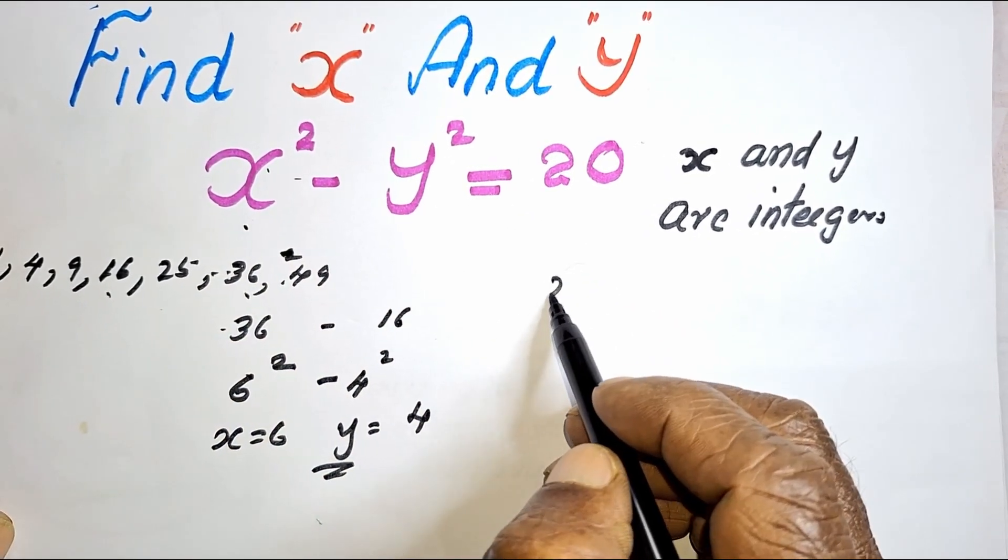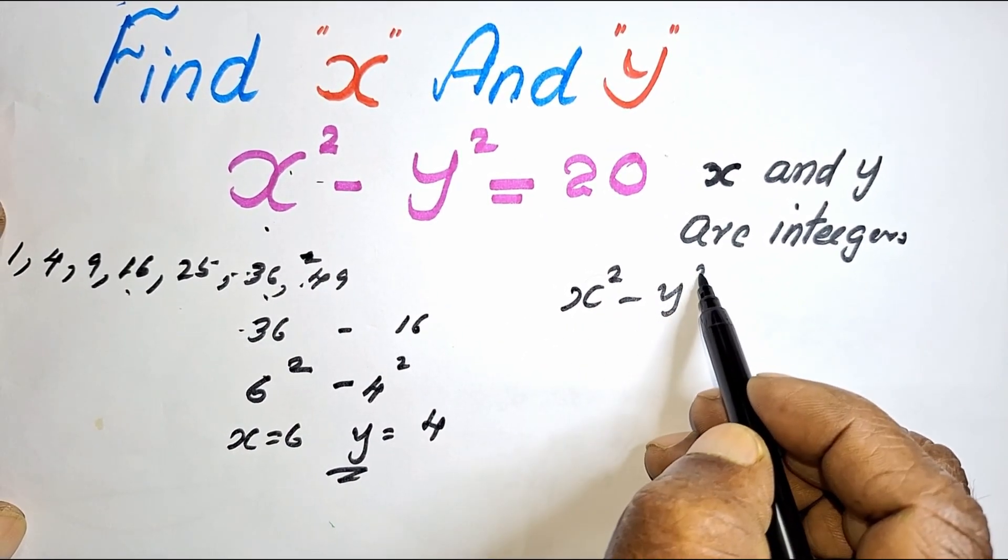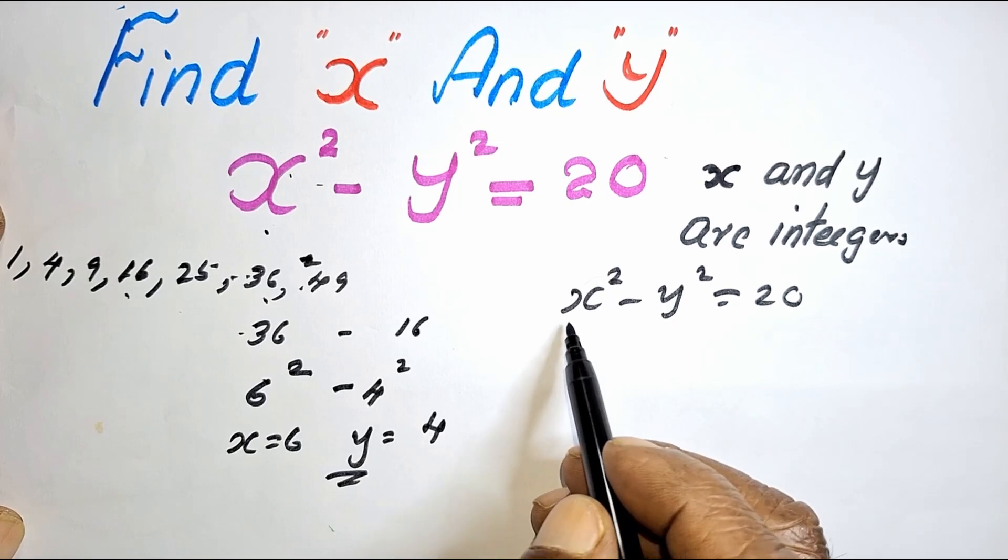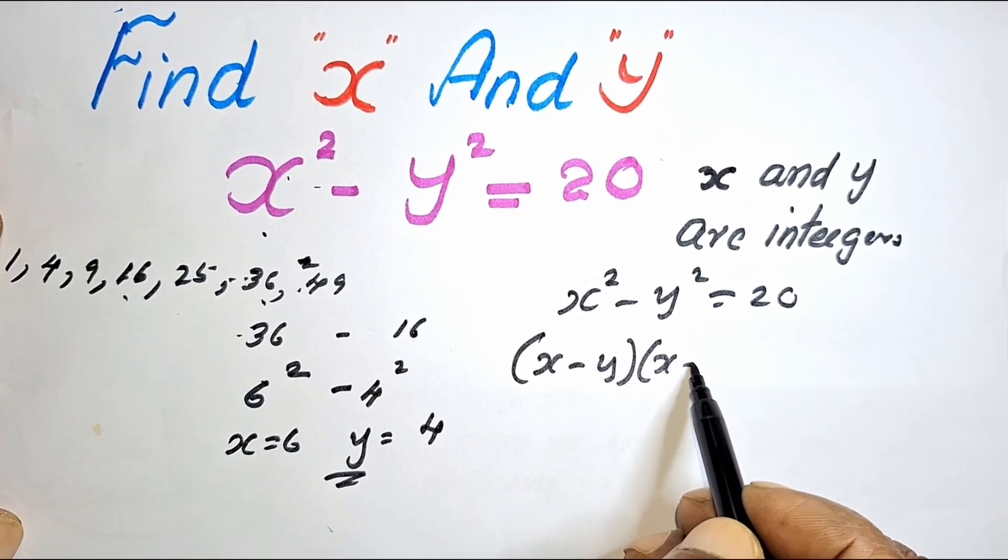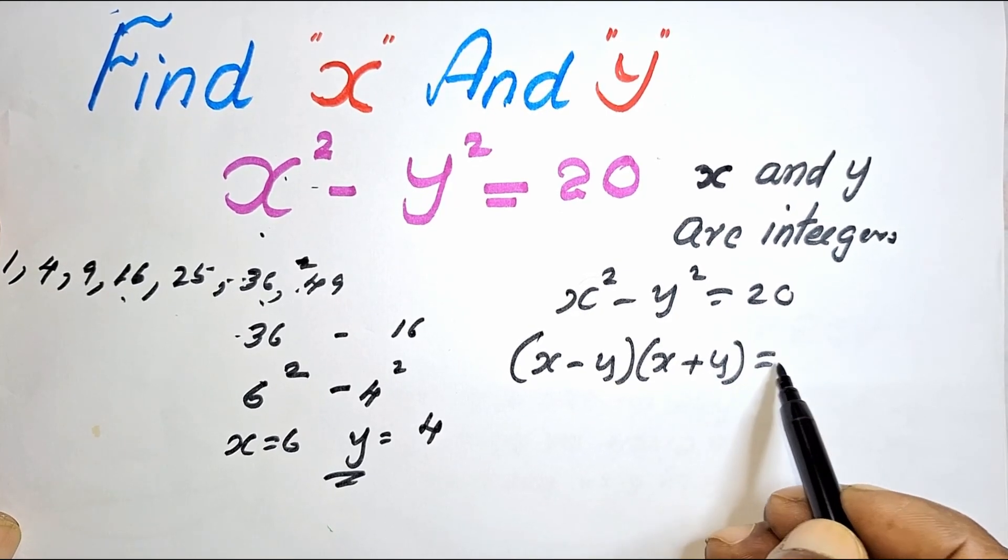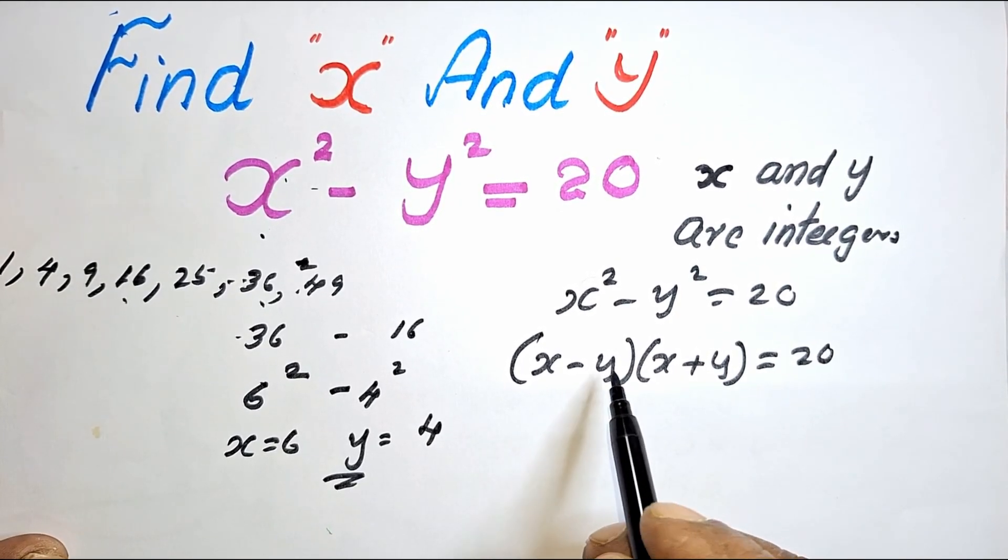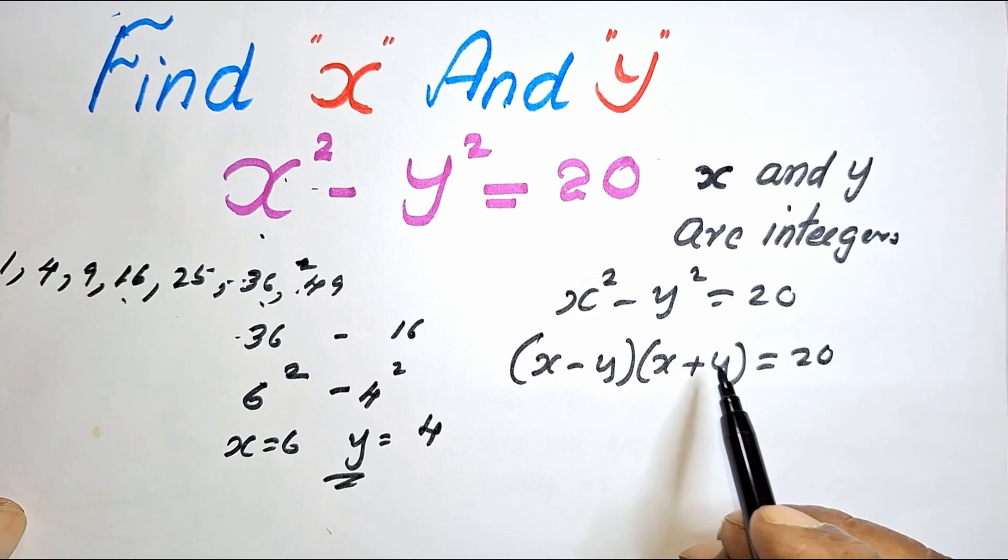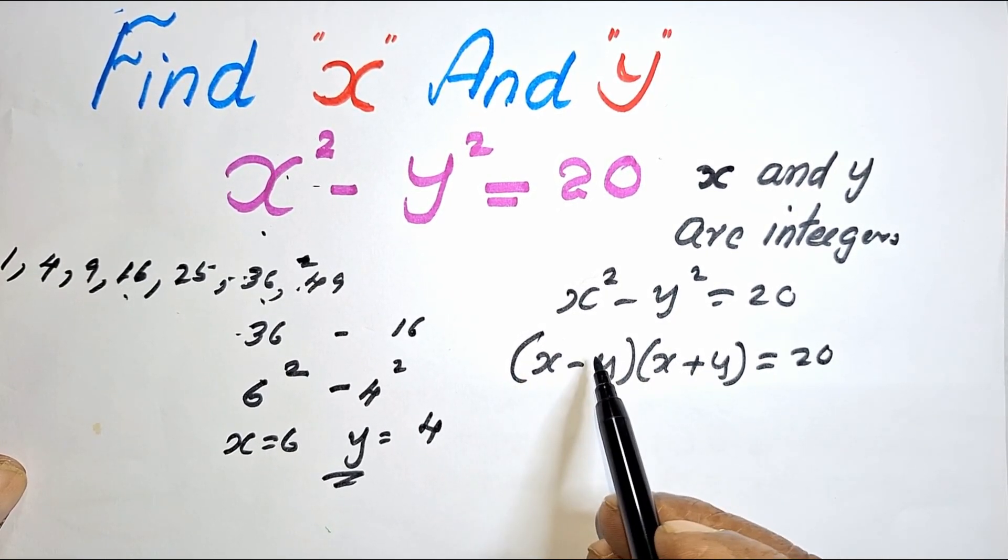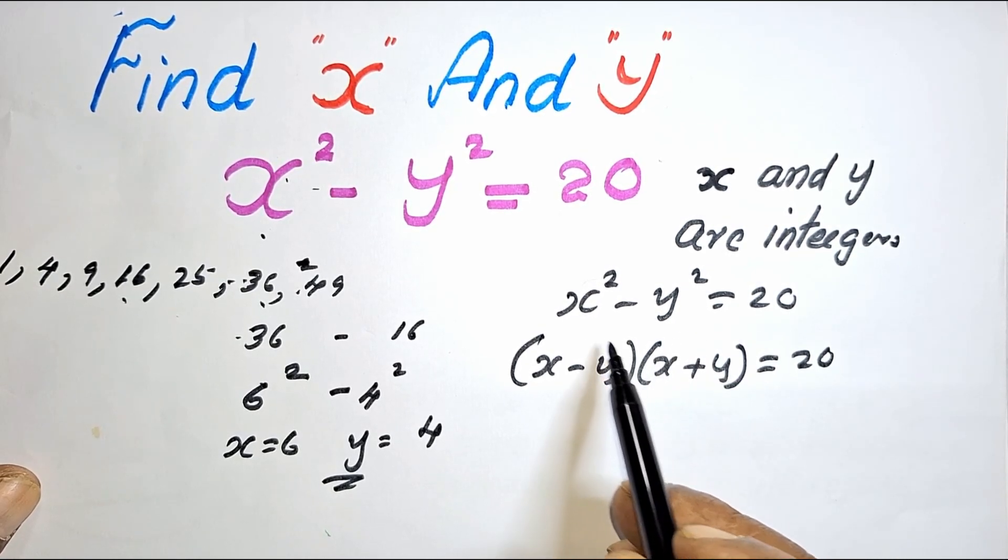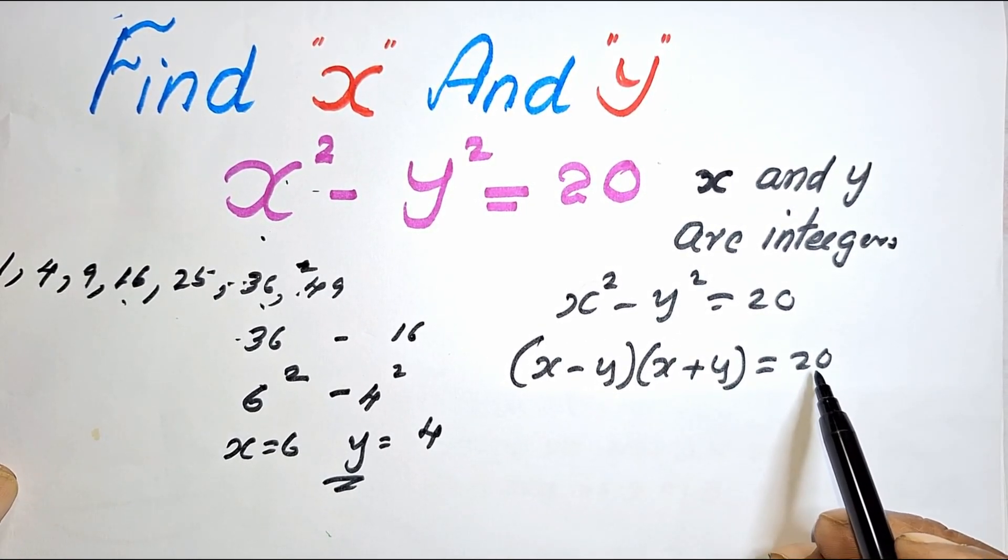Now, X squared minus Y squared is equal to 20. This means we can write this as X minus Y into X plus Y is equal to 20. This means that the sum and the difference, the product of sum and difference of two numbers, equal to 20.